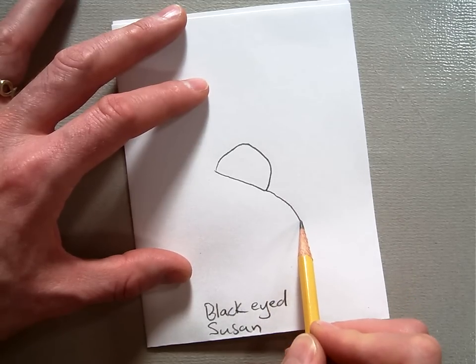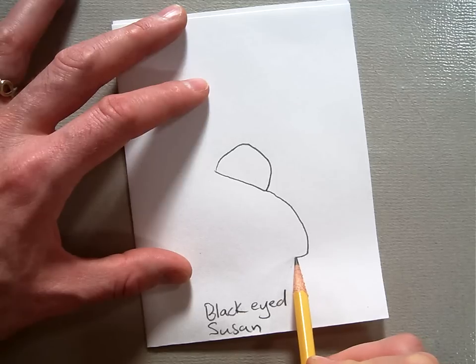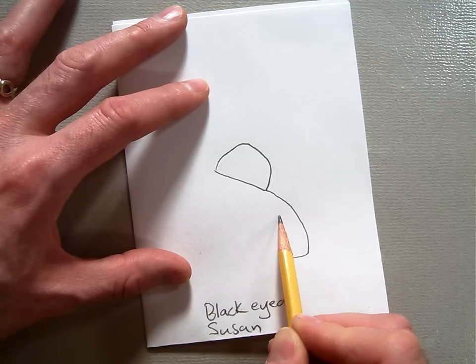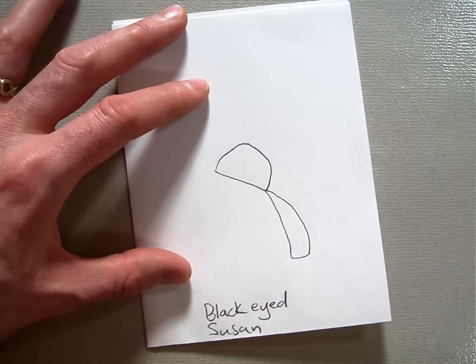So we're going to start by doing a curved line down. And just like our daisy petals, we're going to bring them back up to the center like that.